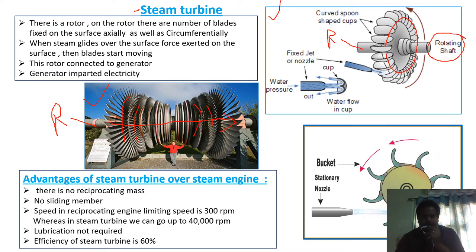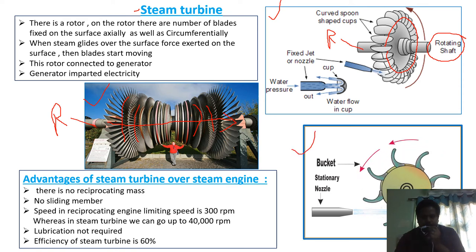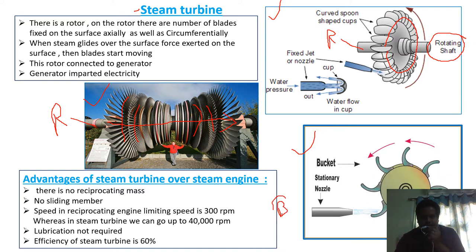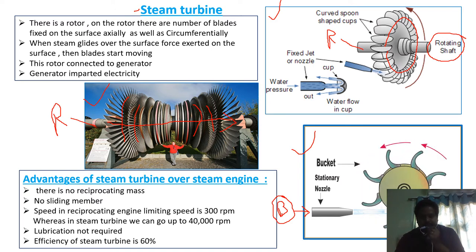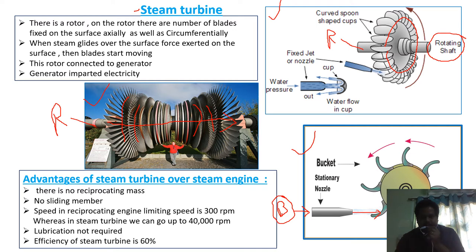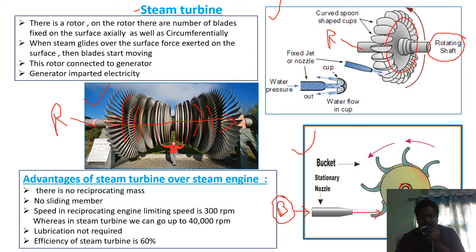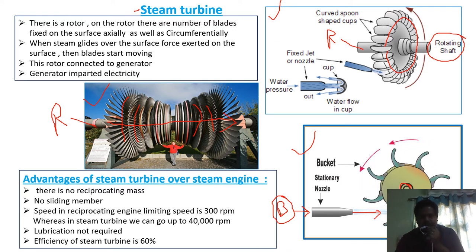Coming to the working: the steam from the boiler will enter into the nozzle. In the nozzle, pressure and potential energy will be converted into kinetic energy, increasing the velocity of the steam. That high-velocity steam will hit the turbine blades so the turbine will rotate. This turbine is placed on the rotor, which is connected to the generator to produce electricity.